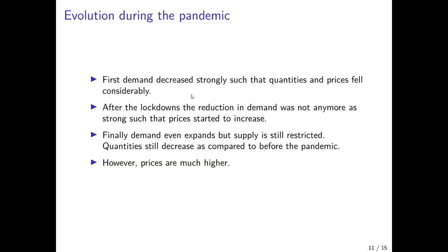We can summarize the development throughout the pandemic. First demand decreases strongly due to uncertainty and lockdowns, so that prices fall considerably and equilibrium quantities as well. Then after the lockdowns and with initial measures of expansionary fiscal policy and with the reduction in uncertainty, the negative demand shock is not as severe, so that prices start to increase, although equilibrium quantity traded is still much lower.